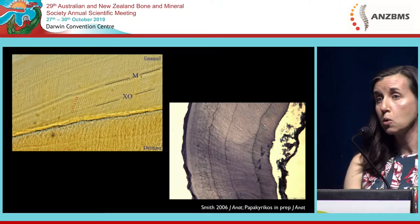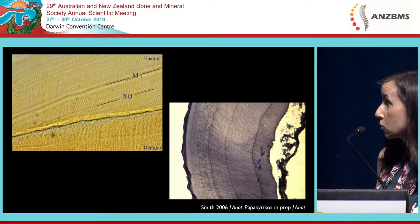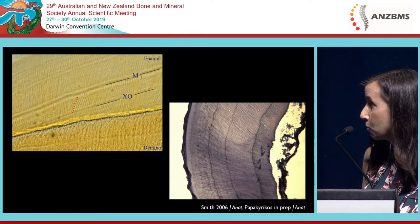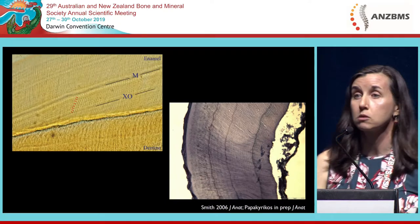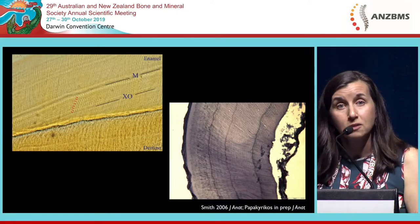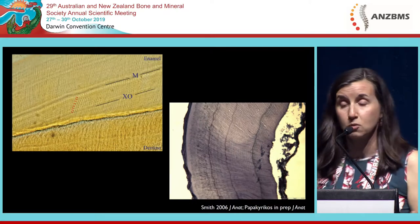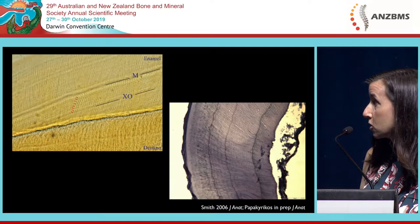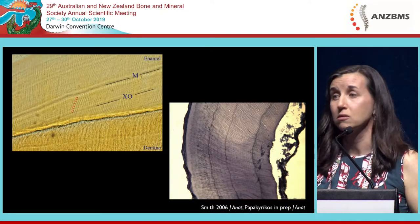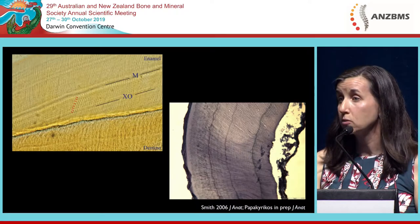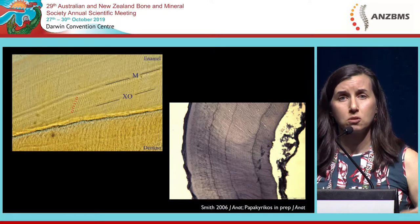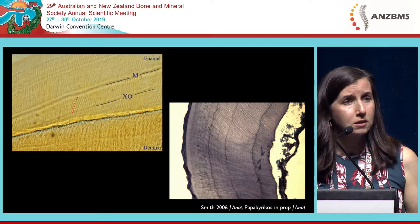We've done similar work on rodents, showing these rhythms in dentine as well. This is an individual that was given a lead acetate marker. There are five bands between these two lead markers, which correspond to the five-day interval of injections. Interestingly, there's also a sub-daily rhythmicity visible in the later part of tooth formation. So there aren't just daily rhythms — there are 12-hour rhythms, and there's evidence for longer-period rhythms in excess of a day. A number of different physiological systems are effectively being recorded inside our bodies.